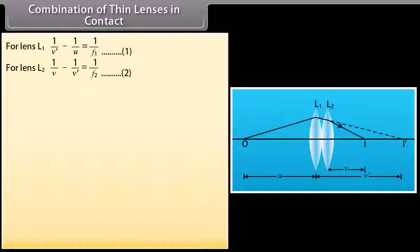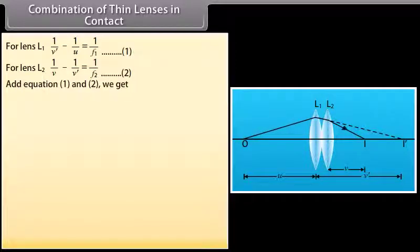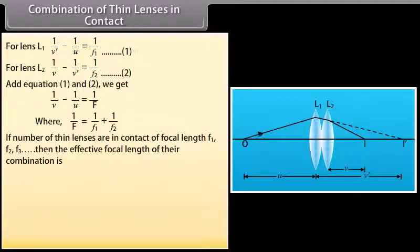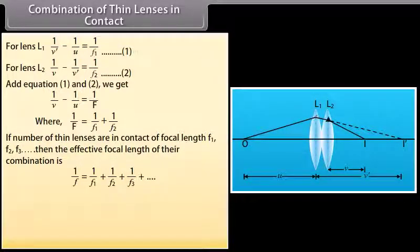For lens L2: 1/V − 1/V' = 1/F2 (Equation 2). Adding Equations 1 and 2: 1/V − 1/U = 1/F, where 1/F = 1/F1 + 1/F2. If the number of thin lenses in contact have focal lengths F1, F2, F3, then the effective focal length is given by 1/F = 1/F1 + 1/F2 + 1/F3 and so on.